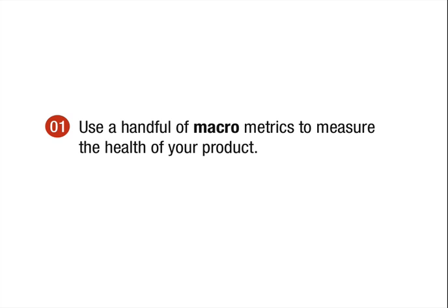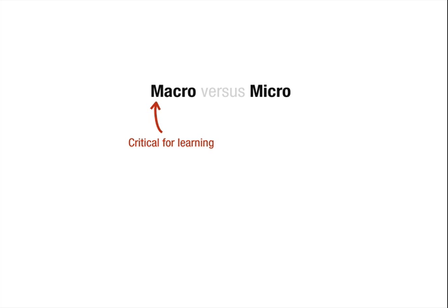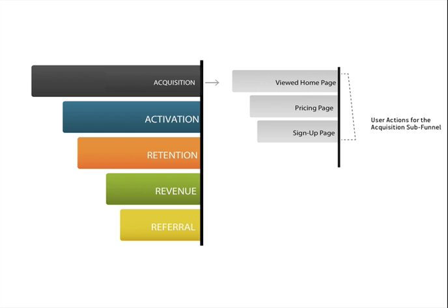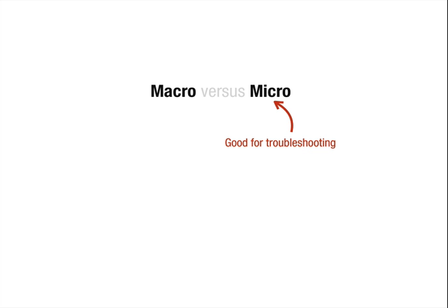The first step is to use just a handful of macro metrics to baseline the progress of your product. Macro metrics capture key customer lifecycle events and are critical for learning. A particular model we subscribe to is Dave McClure's Pirate Metrics, which you are probably familiar with already. The model captures the key customer lifecycle events that define the conversion funnel, starting from how customers first learn about you to becoming happy, paying, and passionate customers. Each of these macro events are in turn made up of a number of sub-funnels, or micro events, which are best suited for more detailed troubleshooting.